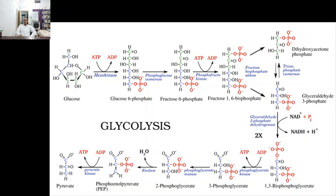Under aerobic conditions, pyruvate can be further oxidized to CO2 and H2O in the mitochondria through the tricarboxylic acid cycle, popularly known as the Krebs cycle or TCA cycle, and the respiratory chain, yielding a large amount of ATP.